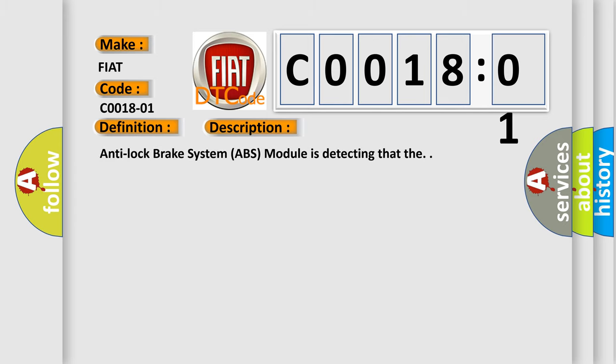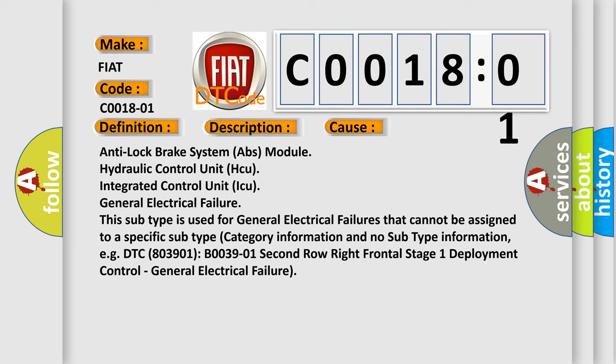Anti-lock brake system ABS module is detecting that this diagnostic error occurs most often in these cases: Anti-lock brake system ABS module, hydraulic control unit HCU, integrated control unit ICU, general electrical failure. This subtype is used for general electrical failures that cannot be assigned to a specific subtype category information and no subtype information. For example, DTC B003901: Second row right frontal stage 1 deployment control, general electrical failure.